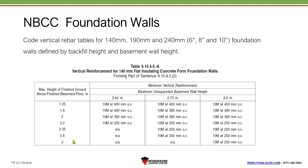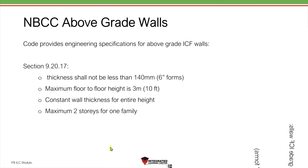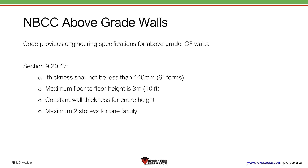For above-grade walls, thickness shall not be less than six inches — four inch is possible but requires engineering. Maximum floor-to-floor height is 10 feet, again exceeding that requires engineering. Wall thickness must remain constant for the entire height — you cannot go from slender to thick. Maximum two stories for one-family dwellings, which is two stories plus a basement.